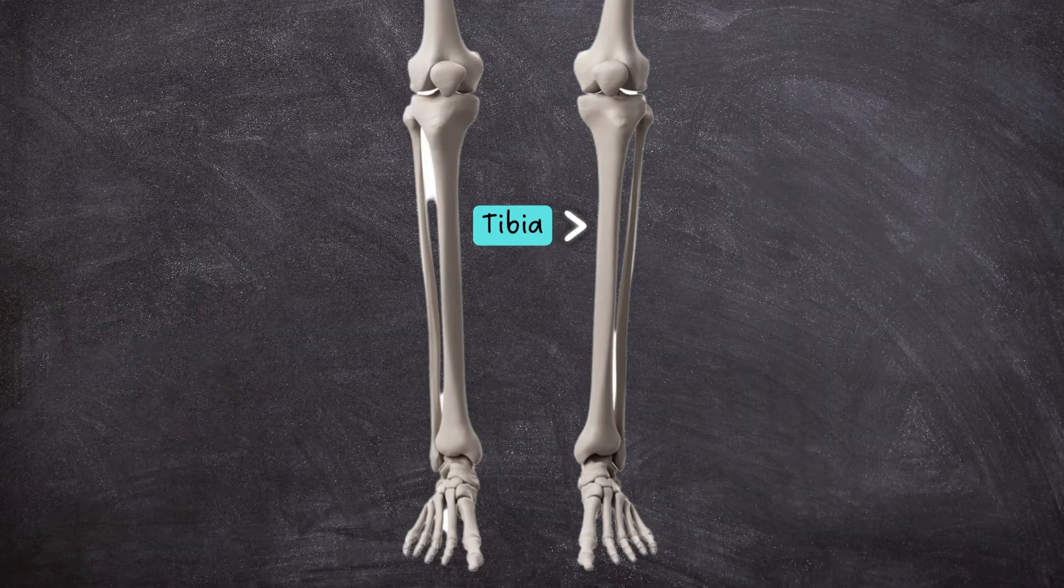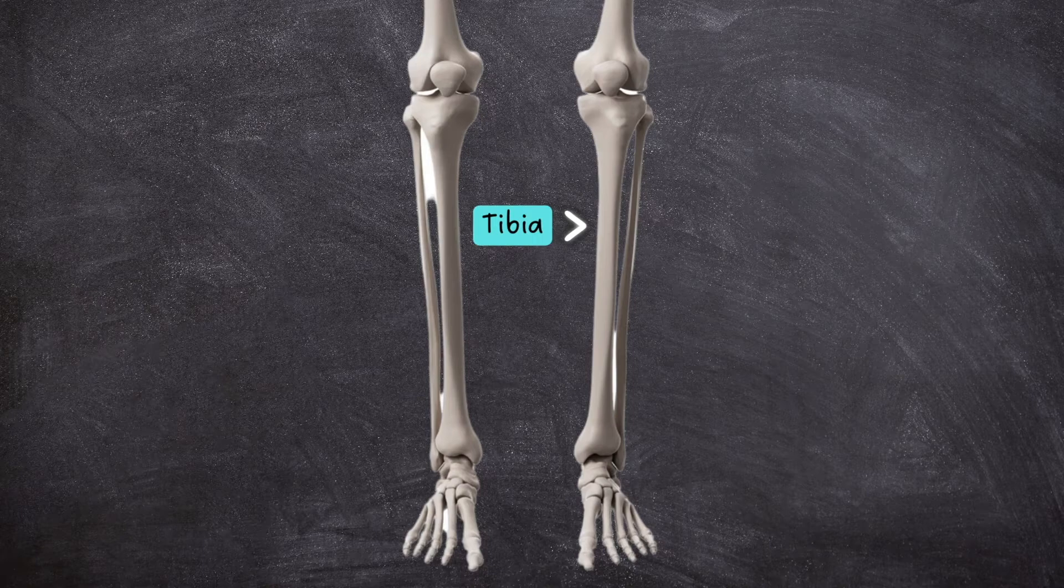The tibia, or shin bone, is the largest of the two long bones in the lower leg, and it articulates with the femur and patella to form the knee.